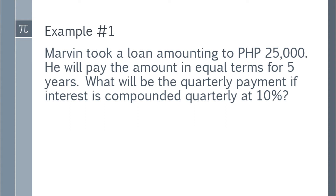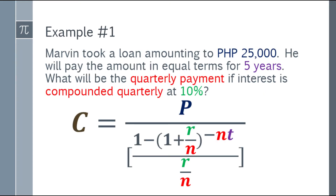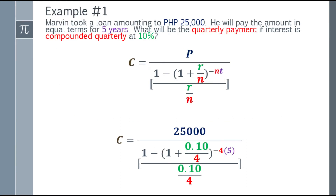Let's have some examples. For the first example: Marvin took a loan amounting to 25,000 pesos. He will pay the amount in equal terms for 5 years. What will be the quarterly payment if the interest is compounded quarterly at 10%? First step, write down the formula. After that, substitute the values. So we have the cash flow or regular payment. In the numerator, P or present value, that will be 25,000.